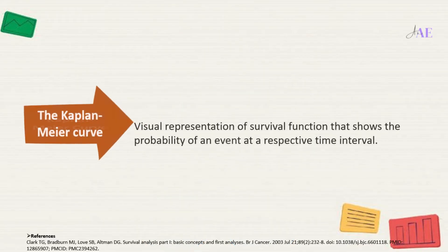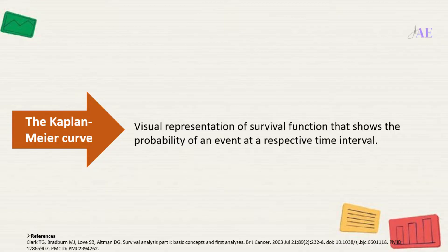Now let's talk more about the Kaplan-Meier Curve. The Kaplan-Meier Curve is a visual representation of the survival function that shows the probability of an event at a respective time interval. This statistical method perfectly matches effective cancer treatments.